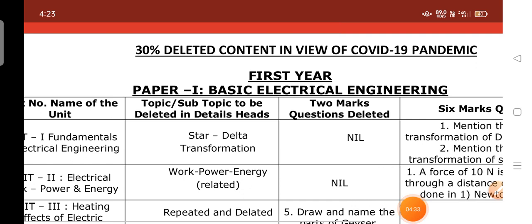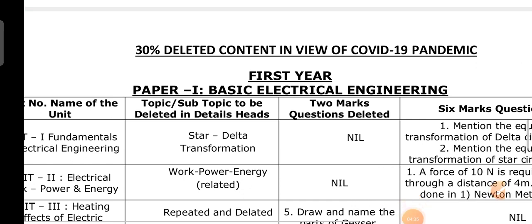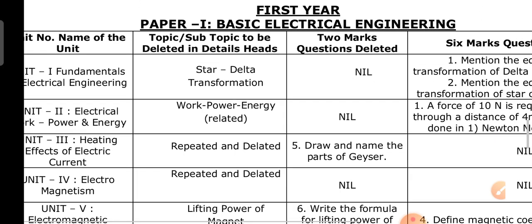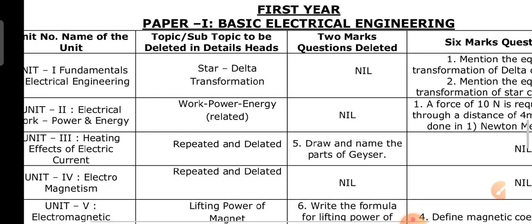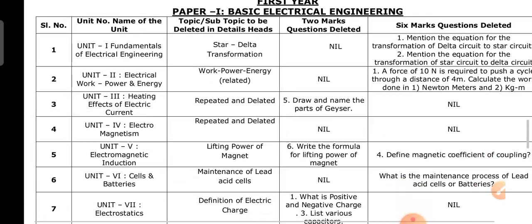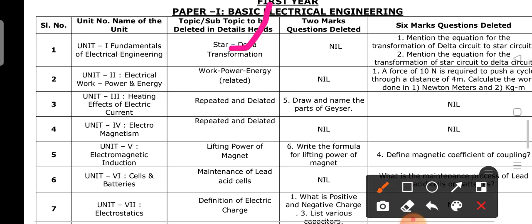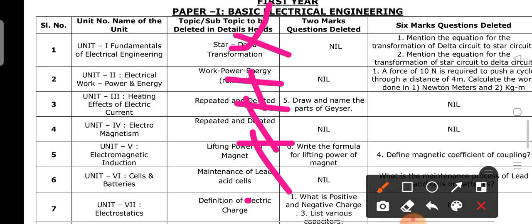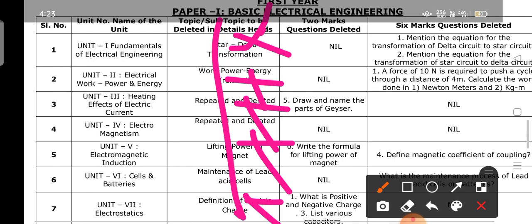This is the 30% deleted content for the students. First, in Paper 1 — Basic Electrical Engineering — these are the topics. No need to read all of it. Everything listed here is deleted content.